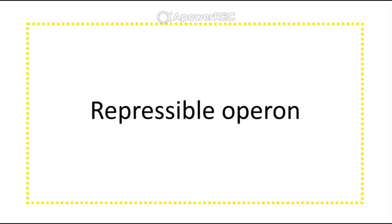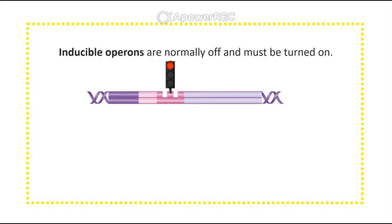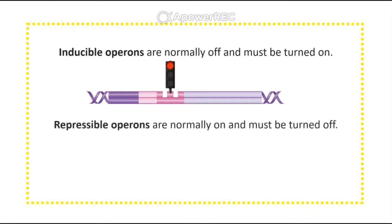Repressible operons are the opposite of inducible operons. Inducible operons are normally off and can be turned on through induction. Repressible operons are normally on and can be repressed or turned off.